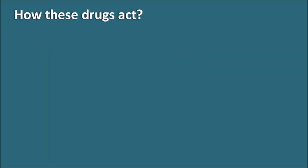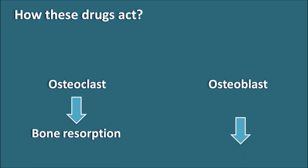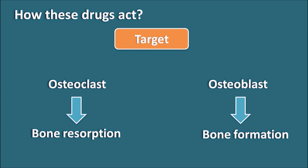How do drugs act in osteoporosis? Bone remodeling involves two important processes: osteoclast activity, which is bone resorption, and osteoblast activity, which is bone formation. The target in the treatment of osteoporosis is to inhibit osteoclast formation, increase osteoclast apoptosis, and increase osteoblast formation to promote bone formation while suppressing osteoblast apoptosis, so that the balance is restored and bone loss can be prevented.